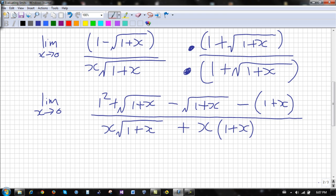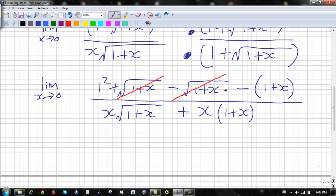As you can see here, positive root 1 plus x minus root 1 plus x would cancel out. So let's rewrite that.